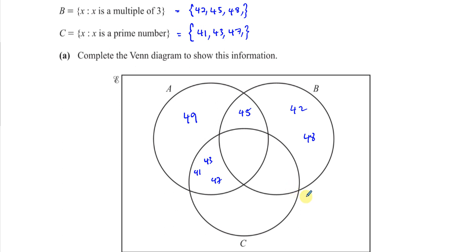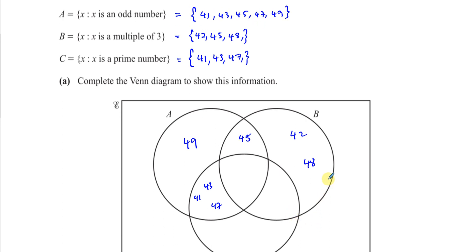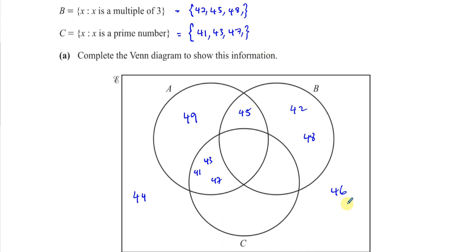Now the numbers outside all circles that haven't been listed yet: 41 is listed, 42 listed, 43 listed, 44 is not listed — so 44 goes outside. 45 listed, 46 is not listed — 46 goes outside. 47, 48, 49 are listed. 50 is not listed — so 50 goes outside. Here we have the Venn diagram completed.